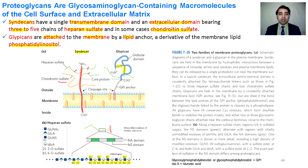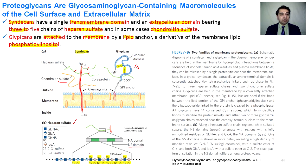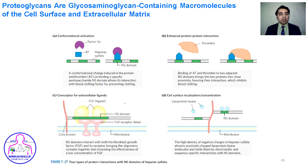Glypican contains a globular domain with 14 conserved cysteine residues involved in making disulfide bridges. Glypican is attached to the membrane through a GPI anchor. Heparin sulfate has a conserved NA domain while the NS domains are variable among individuals, and these NS domains are highly sulfated. These highly sulfated domains are very important in biochemistry.